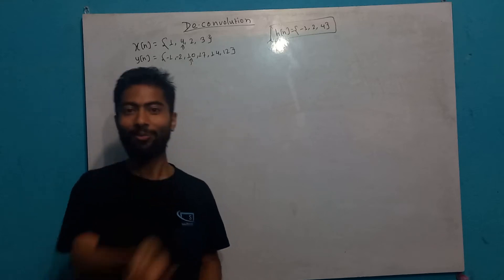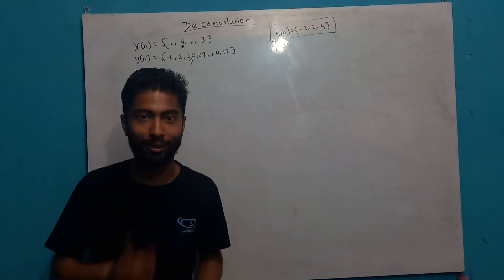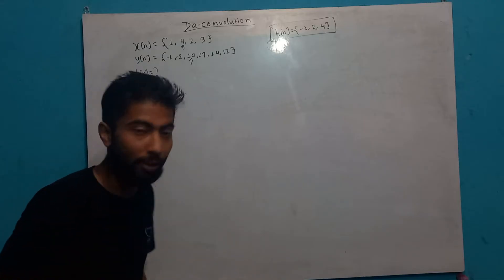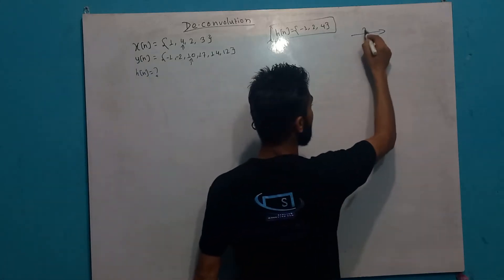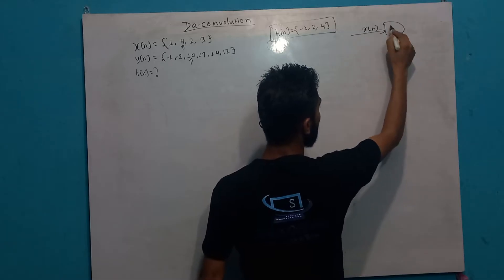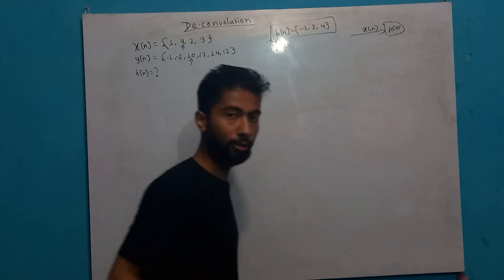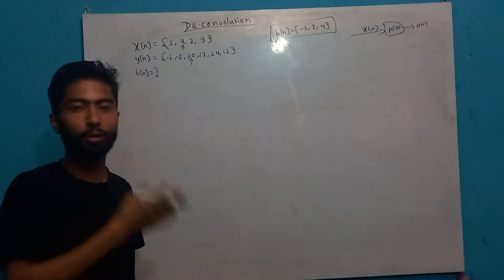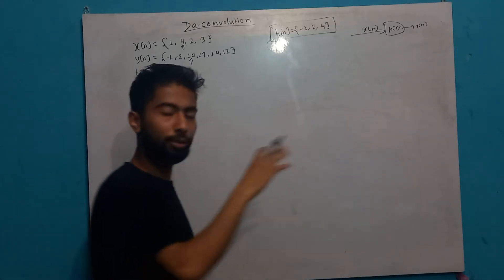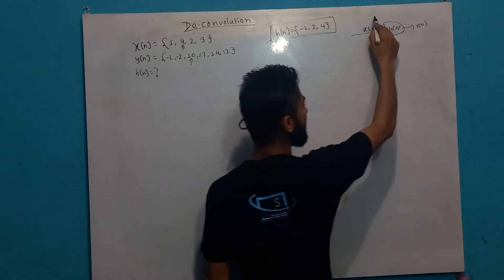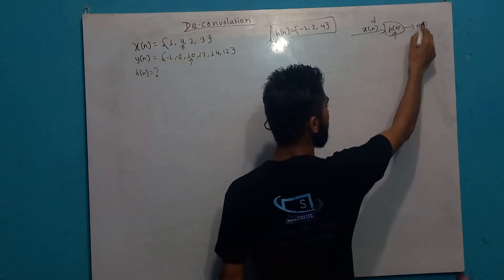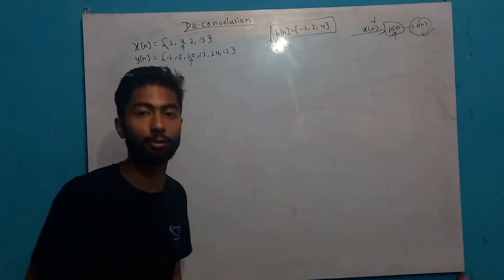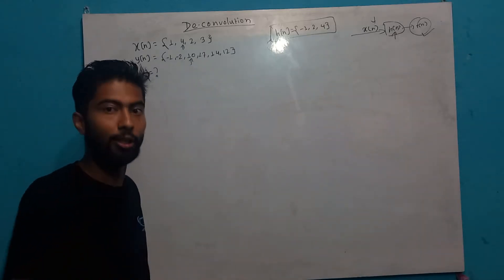Hey, welcome back to our new video. In this video, we will discuss the same problem. We have to explain that the X input, which is the X impulse response. We have a system called convolution sum — the X input or Y output — and we will show the deconvolution process. So this is the deconvolution.